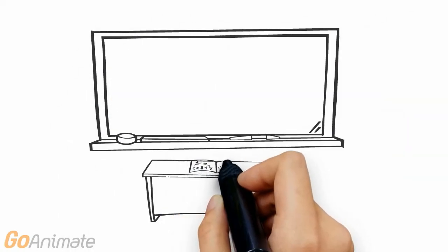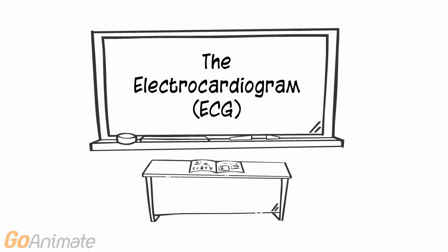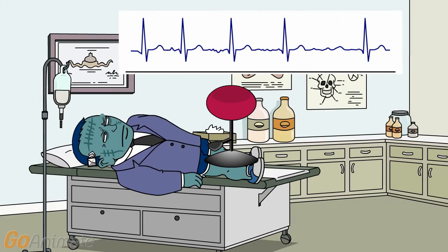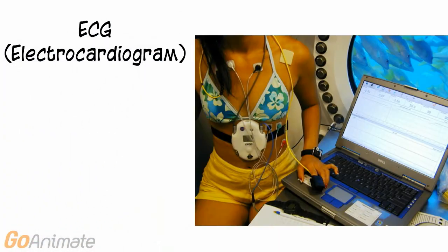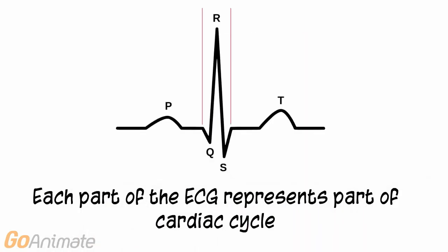Let's learn about the electrocardiogram or ECG. The ECG is a measurement of the electrical signals of the heart. Each part of the ECG represents part of the cardiac cycle.